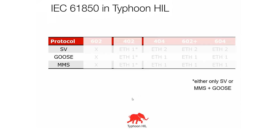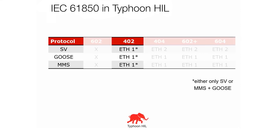Looking at different HIL devices and protocol capabilities: the 602 does not support any of the IEC 61850 protocols. The 402 device has only one Ethernet port on the back side, so it supports all three protocols but not all of them at the same time. Because the SV protocol is most resource-demanding, it can only run separately — meaning either only SV protocol can run on that Ethernet port, or GOOSE plus MMS can run. All three cannot run at the same time.